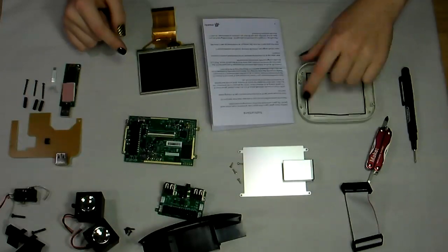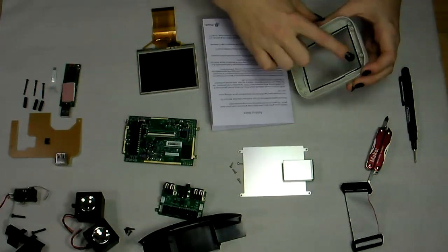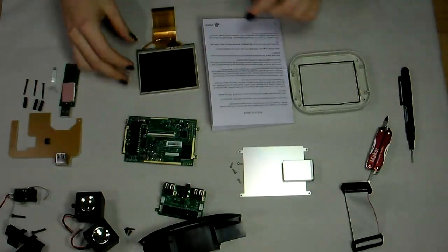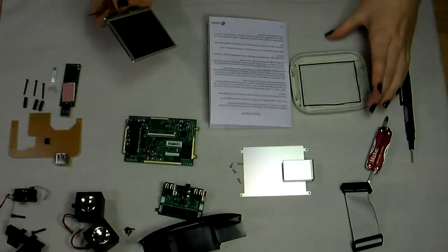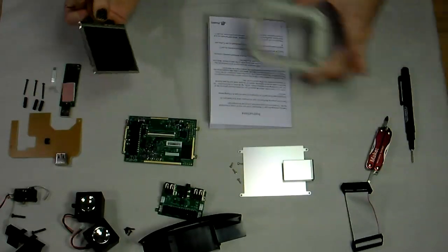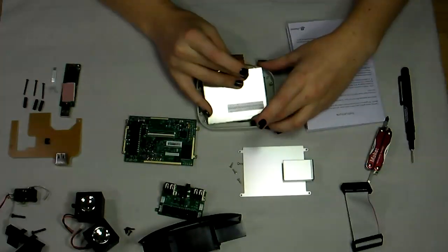First, take the gasket for the LCD and attach it very carefully to the inside of the frame here. And then, take the LCD screen and insert it on top of the gasket.